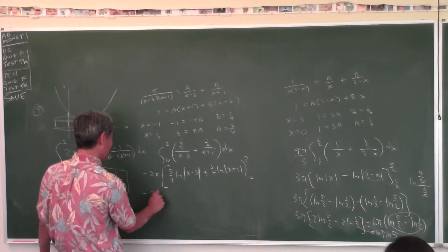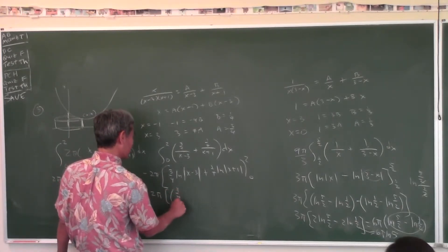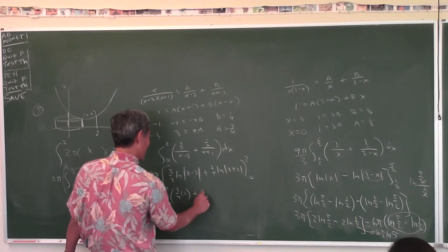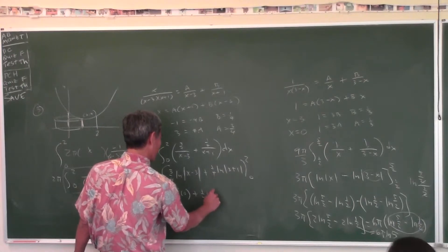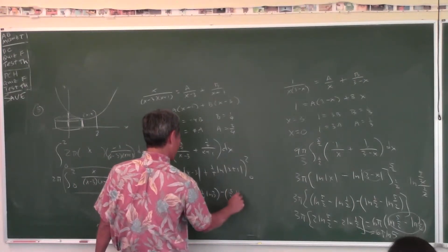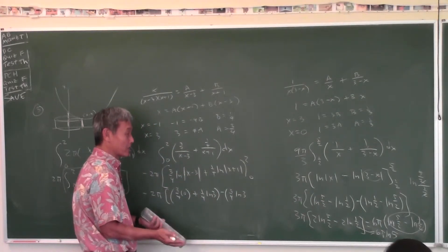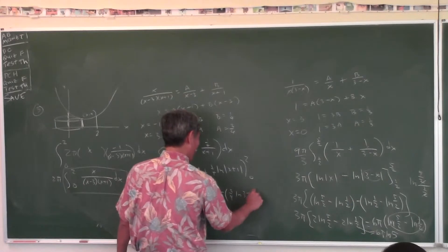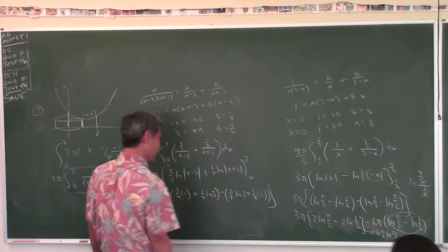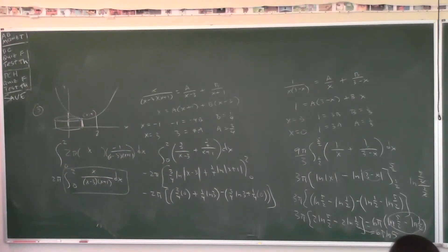Plug in the top number: (3/4)·ln|2 minus 3| equals (3/4)·ln(1) equals 0, plus (1/4)·ln(3). Minus plug in the bottom: (3/4)·ln(3) plus (1/4)·ln(1) equals 0. So you get two zeros and the terms simplify.